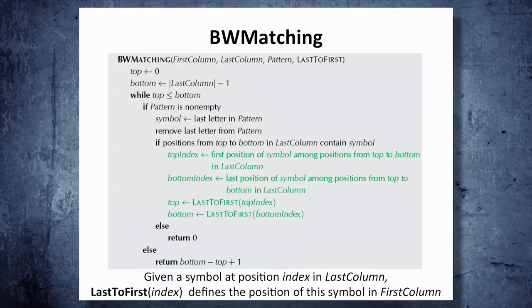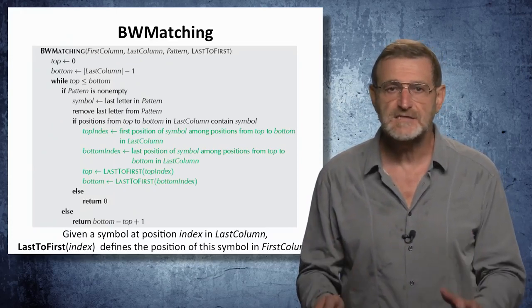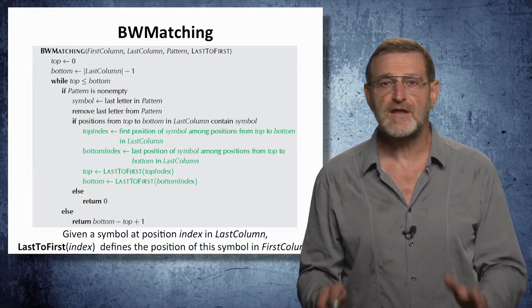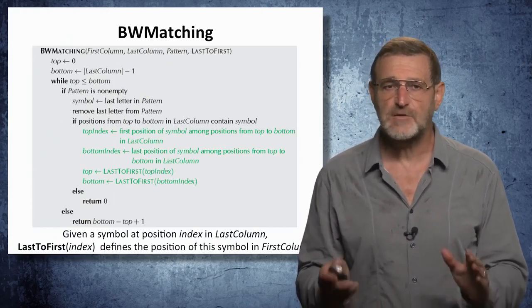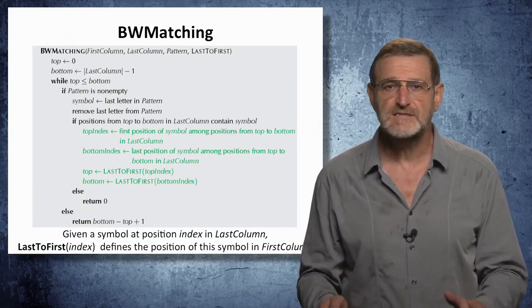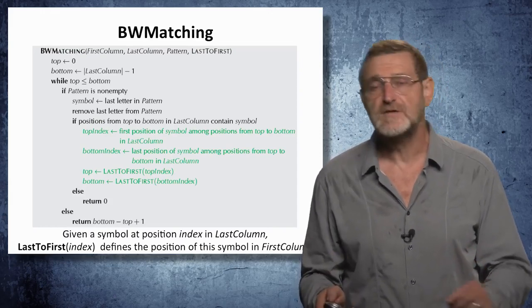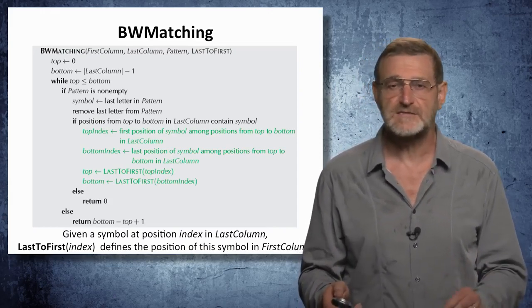The algorithm that I just described translates into the following BWMatching pseudocode. And you can see lines in green describe what we have been doing with these top and bottom pointers. Note that we are using LastToFirst array, and given a symbol at position index in last column, LastToFirst(index) defines the position of this symbol in the first column. So it implements the first-last property.